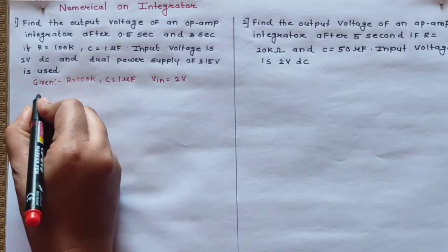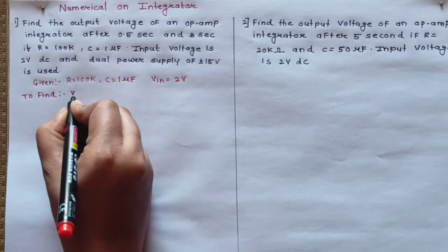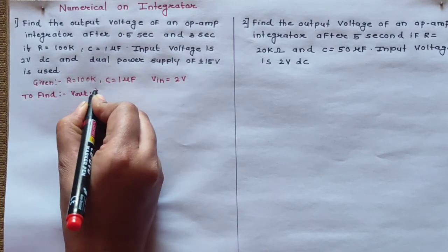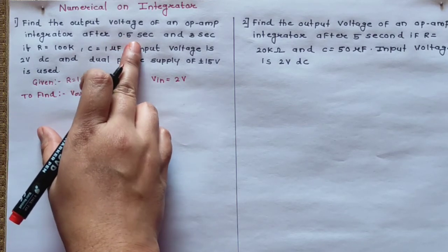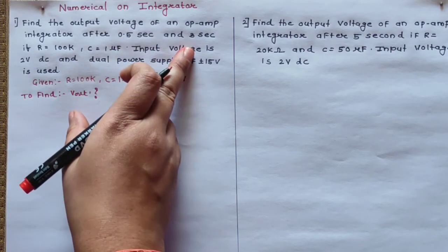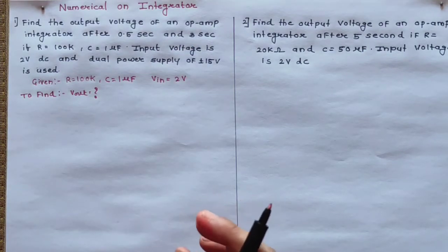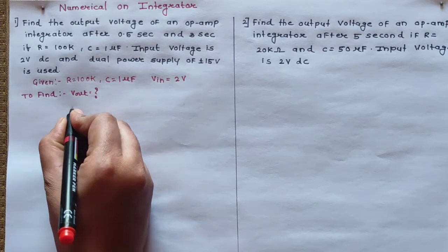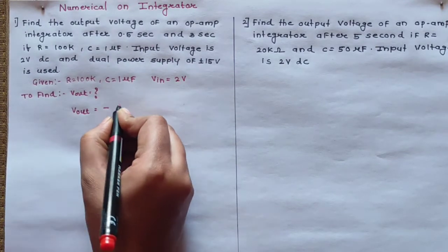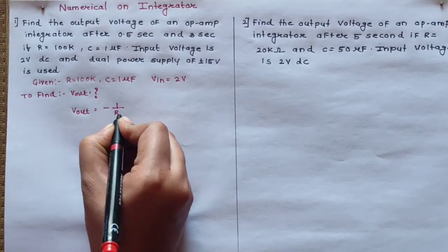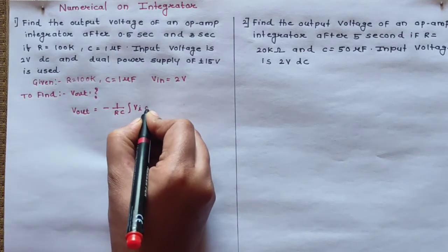You have to find out the output voltage — Vout — after 0.5 second and 3 second. So let's come to the solution. First of all write down the output formula. For the integrator, output is given by minus 1 upon RC, integration of input into dt.